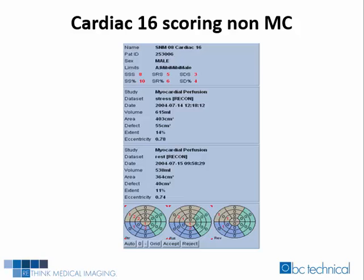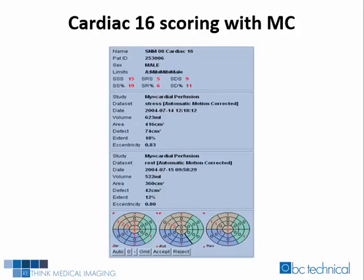Cardiac XVI's non-motion-corrected study quantitative scoring results: the summed stress score was eight, the summed rest score was eight, and the summed difference score equaled three. Cardiac XVI's motion-corrected study quantitative scoring results: the summed stress score equaled 15, the summed rest score was five, and the summed difference score equaled nine.